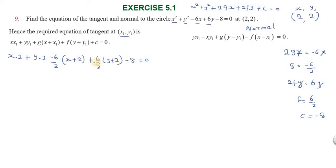Simplifying the equation: 2x + 2y + 2x + 2y - 3x - 6 + 3y + 6 - 8 = 0. Combining terms: 2x - 3x gives -x, and 2y + 3y gives 5y. The x terms cancel, leaving 2x - 8 = 0.